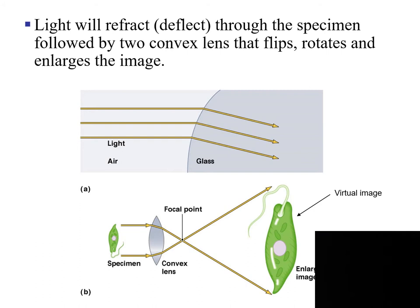The compound light microscope uses visible light. Light will refract through the specimen, followed by two convex lenses that will flip the image, rotate the image, and also enlarge the image. The visible light is going through one medium — air — and then when it reaches the convex glass lens, it will be refracted. It will bend, and this bending is going to create the image.